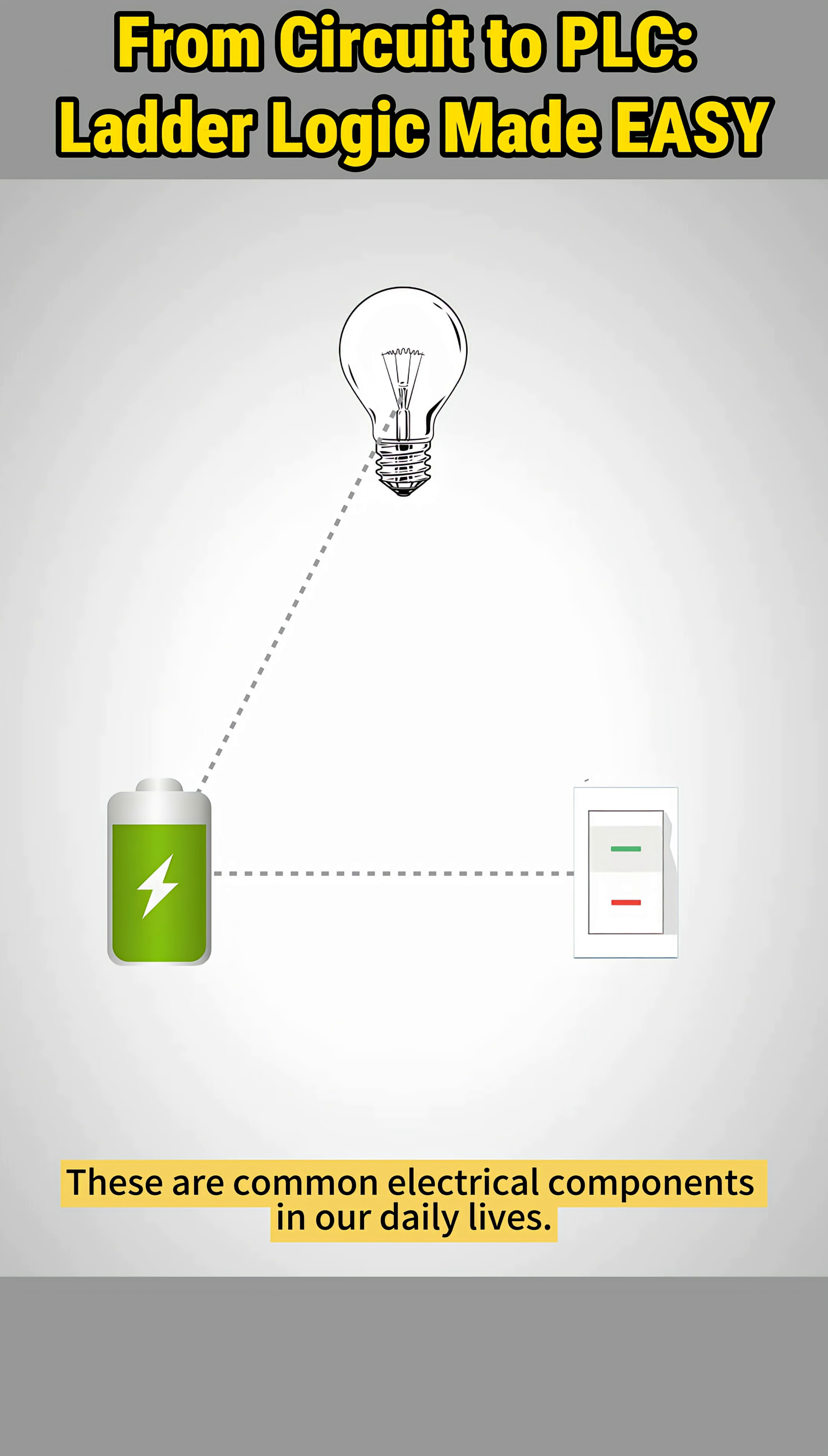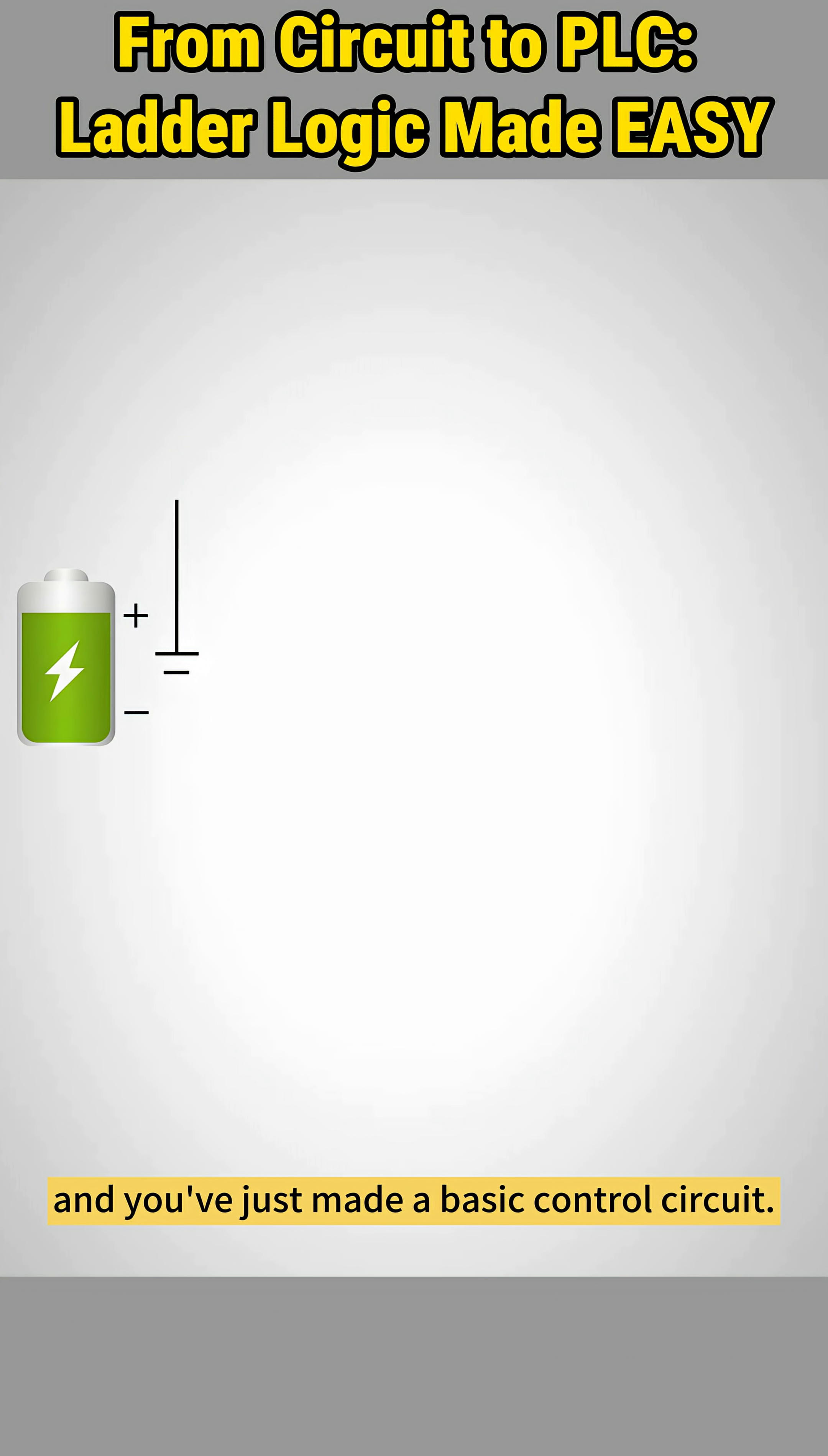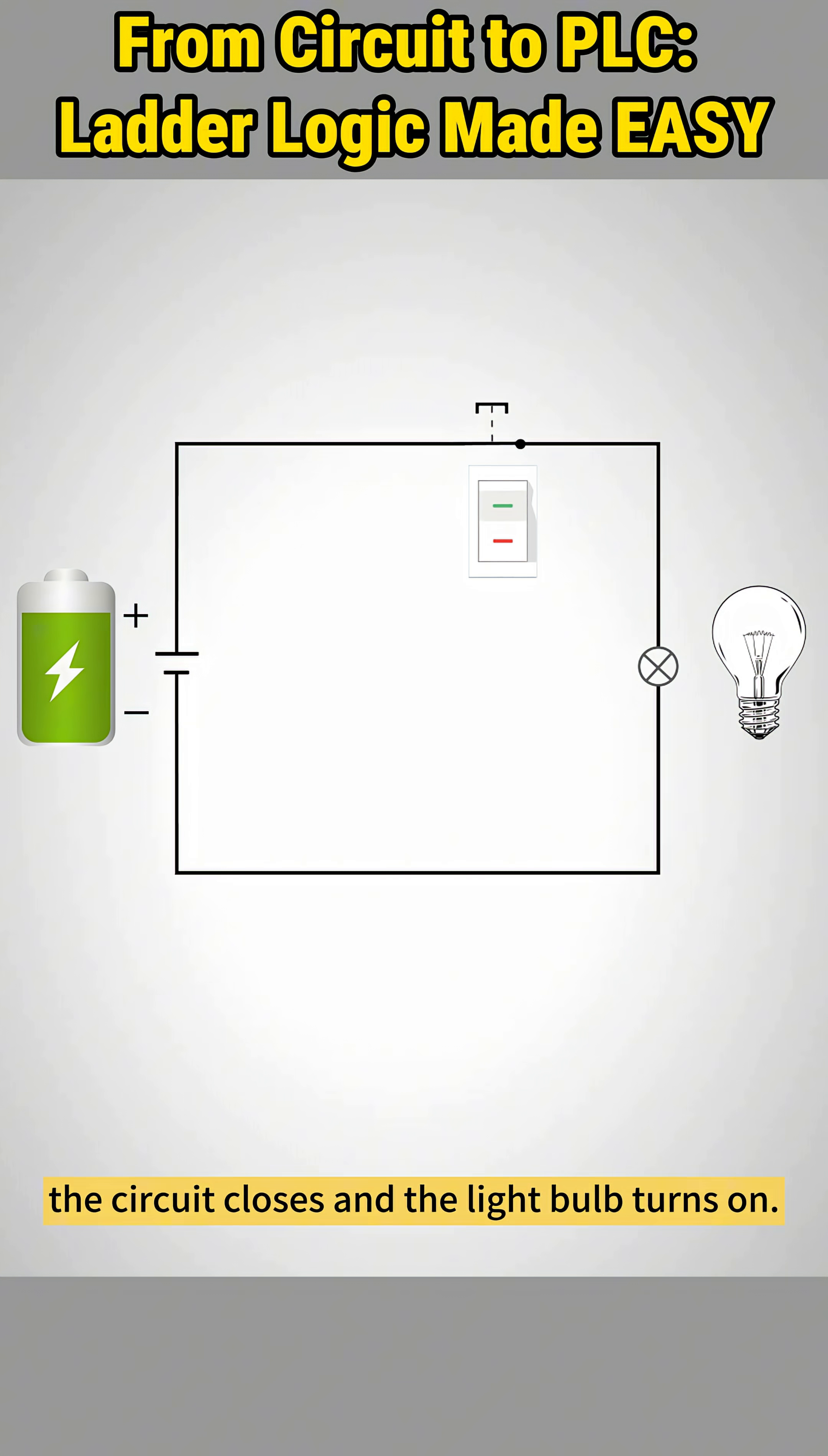These are common electrical components in our daily lives. Connect them with wires and you've just made a basic control circuit. When you press the switch, the circuit closes and the light bulb turns on.